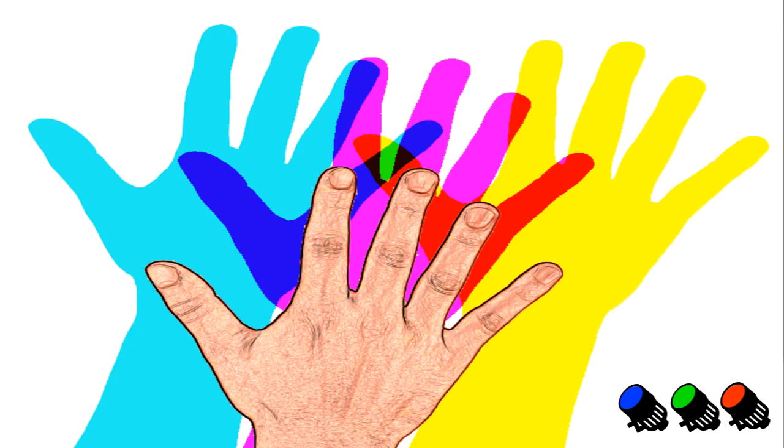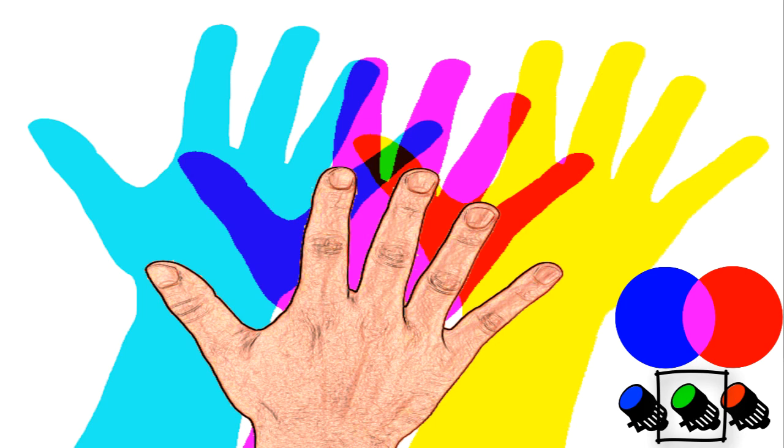The spot on the screen where I only block blue light, I see a mixture of green and red, which makes yellow. And the place on the screen where my hand only blocks green, I see a mixture of the remaining two lights, which is magenta.